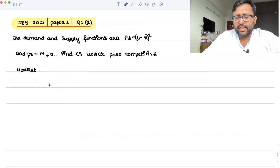So the best is, we should be defining what consumer surplus is, because since this is a mathematical question, just write one line.